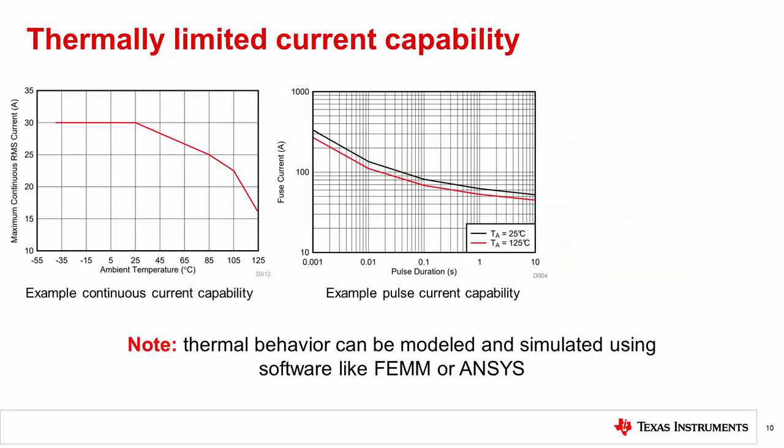Because the thermal capability of an in-package magnetic sensor is so dependent on its PCB layout and system environment, many characteristics of a sensor are characterized and specified to a particular board layout, usually that device's evaluation module or EVM. Please read the device data sheet to see how specs like maximum continuous current and pulsed current capability are defined. Note that if you use a different PCB design in your application, you will observe different results.